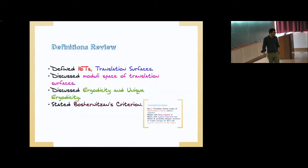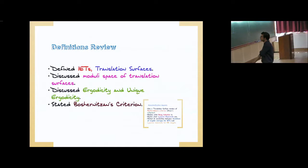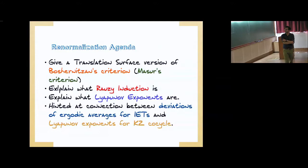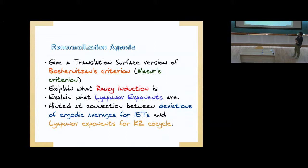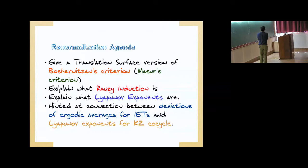That was the end of my first section. Let me review so far: we've defined IETs, we've defined what a translation surface is, we've briefly discussed the idea of a moduli space of translation surfaces and that you can deform them, we've discussed ergodicity and unique ergodicity, and we've stated Bozernitsyn's criterion. What's on our agenda now is to give a translation surface version of Bozernitsyn's criterion called Masur's criterion, to explain what Rauzy induction is, to explain what Lyapunov exponents are in this context, and to hint at a connection between the deviation of ergodic averages for interval exchange transformations and Lyapunov exponents for the Kontsevich-Zorich cocycle.